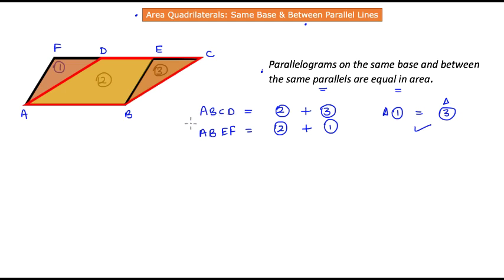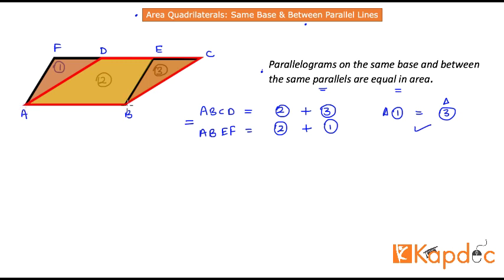With that, we can say that the area of parallelogram ABCD equals the area of parallelogram ABEF. That is one method. Now to prove it mathematically, let's assign dimensions: let the base AB equal x centimeters, and the height between the two parallel lines equal y centimeters.